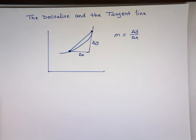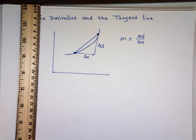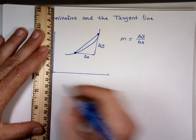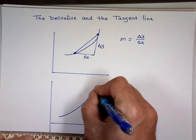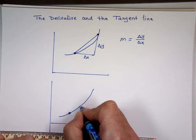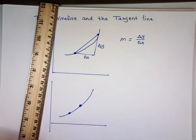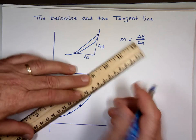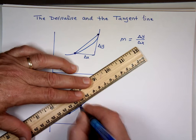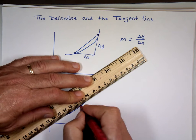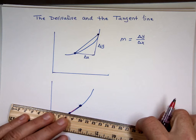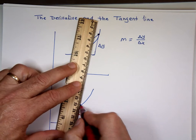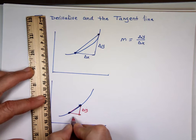Now what if you pick two points closer together? Same graph — instead of a point here and a point there, get them closer. There are the two points. Can you find the slope of the line that connects them? Here's the red line connecting them. The rise over the run — the change in y over the change in x.